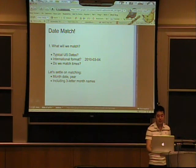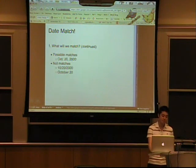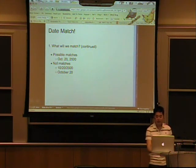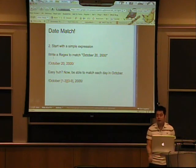So we'll decide what we want to match. We're going to match a month, date, year, including the three-letter abbreviations. Here's a possible match and a couple things that are not matches.